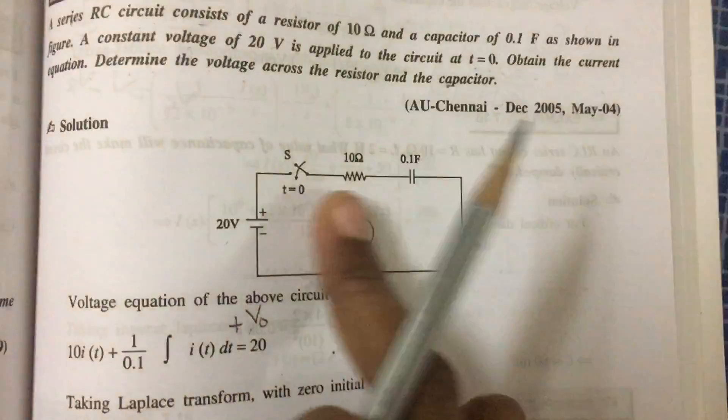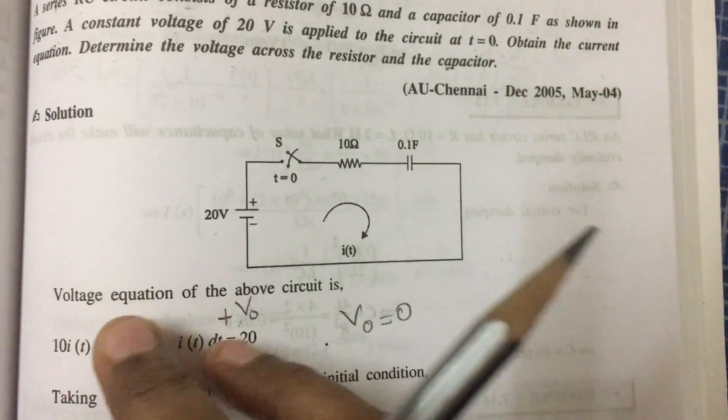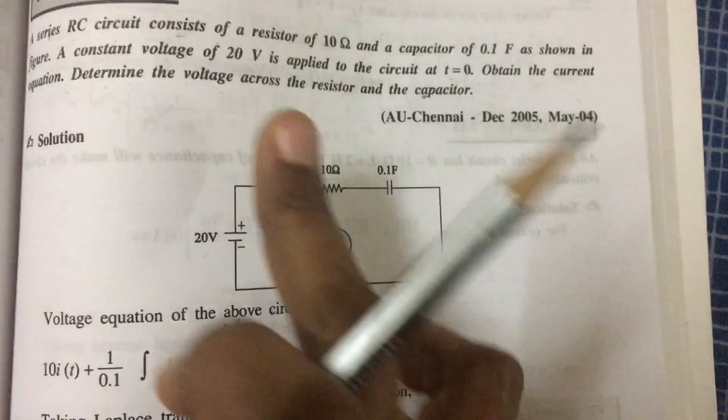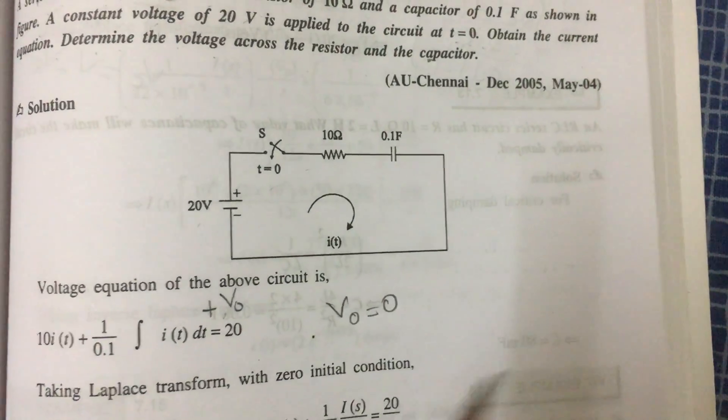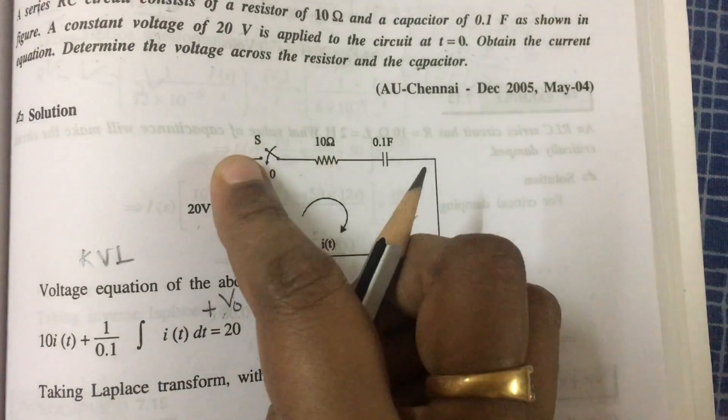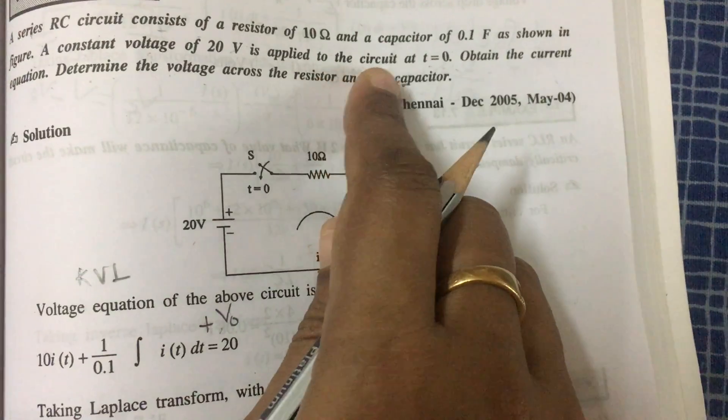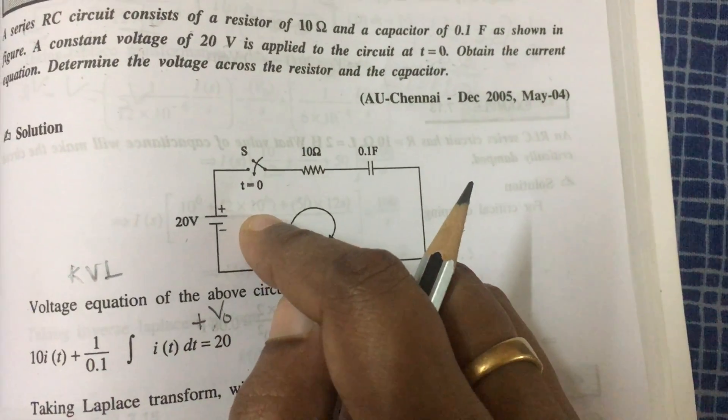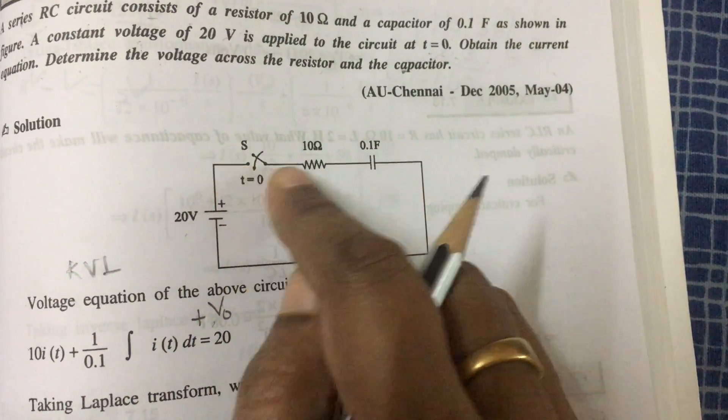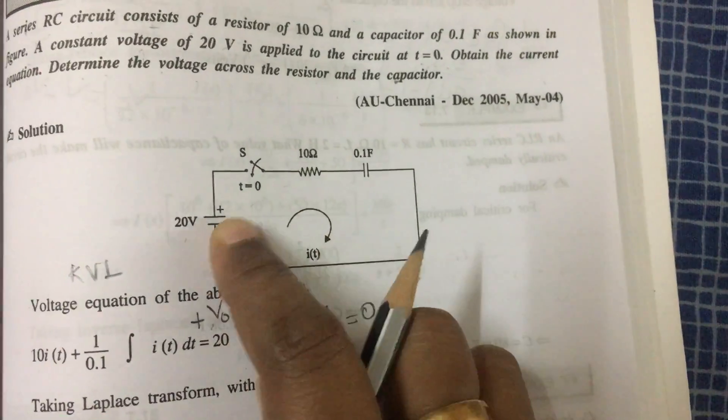It is the RC circuit and it is the voltage source and the switch. What do we have to do? Find the voltage across the resistor and capacitor. What is the first step? You want to apply KVL, Kirchhoff's Voltage Law. When the switch closes, apply KVL, because constant voltage is applied at time t equals 0. When voltage is applied, the switch must close. So apply KVL.